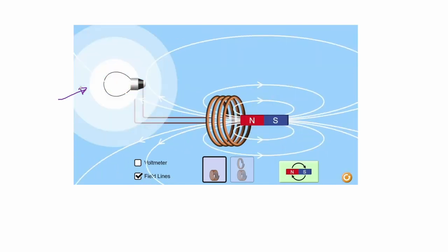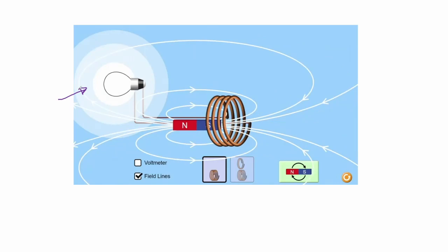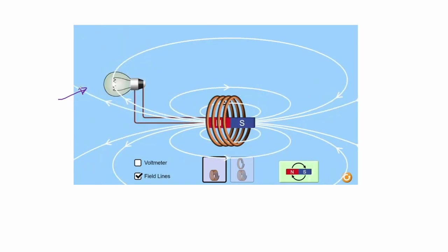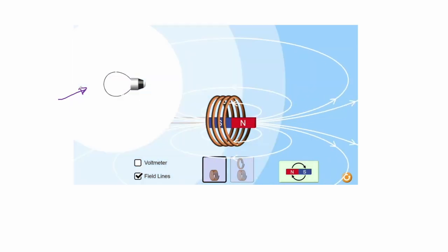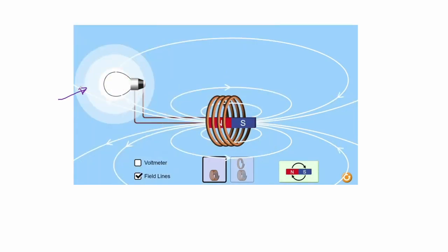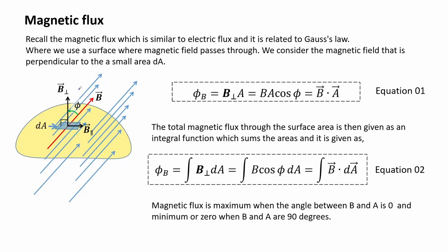This phenomenon is described by Faraday's law which we will discuss in this module. An important concept in understanding Faraday is the magnetic flux. Recall that magnetic flux is similar to electric flux and it is related to Gauss' law, where we use a surface through which the magnetic field passes. We consider the magnetic field that is perpendicular to a small area dA.